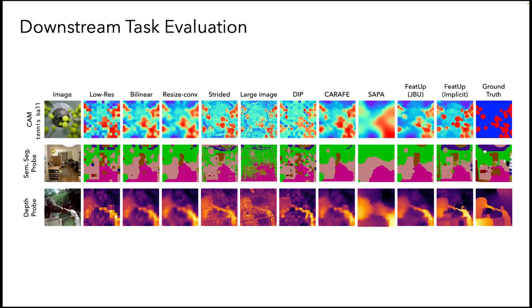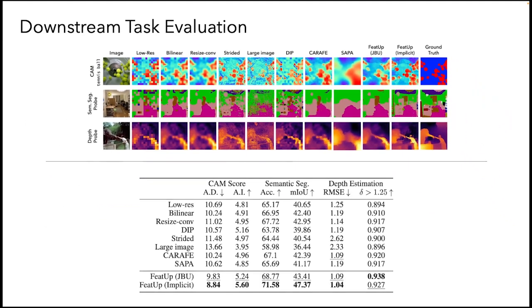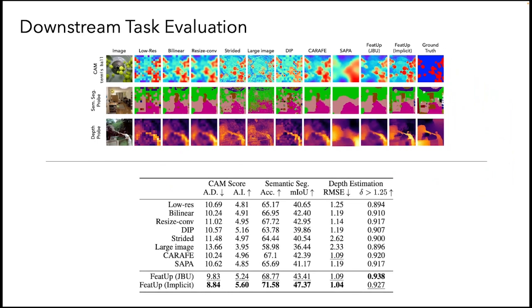We also perform linear probe transfer learning to assess feature quality. We train a linear probe on the low-resolution features and use it to evaluate semantic segmentation and depth estimation performance across multiple different upsampled features. Across both tasks, FEEDUP produces higher resolution results and outperforms existing upsamplers.